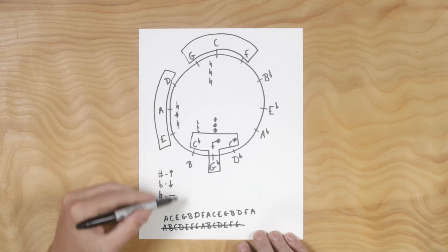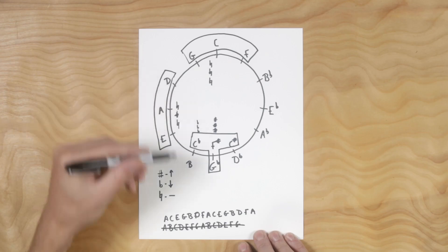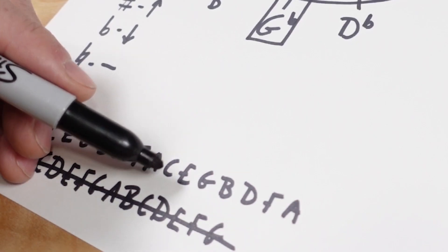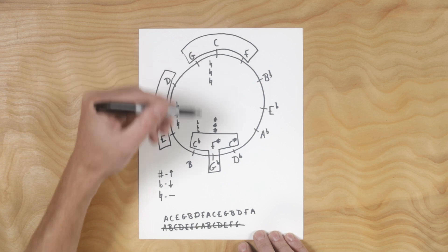So if I start on E, we have E G sharp B. If I start on D, it's D, F sharp, A. If I start on A, it's A, C sharp, E.